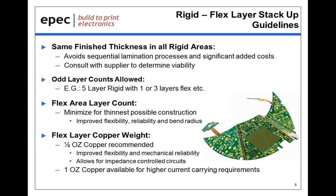Regarding copper weight, by far the most common copper weight used in flex and rigid flex is half-ounce, and that is indeed what we recommend. By minimizing the copper — which is the stiffest component within a flex construction — the flexibility and mechanical reliability is improved, and in many cases it facilitates achieving impedance-controlled circuit values. One-ounce copper is available and used fairly often, but it's typically reserved for applications that have a higher current carrying requirement that can't be accommodated with half-ounce.